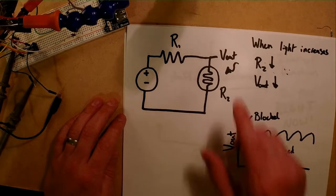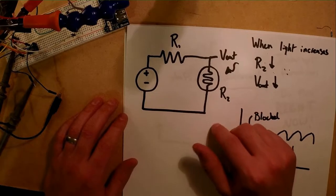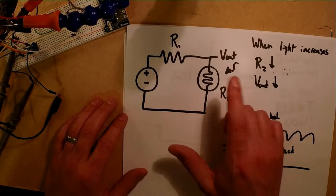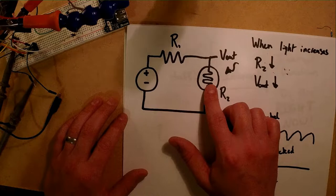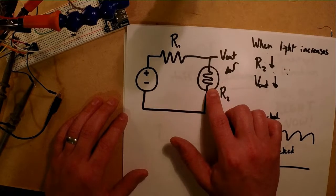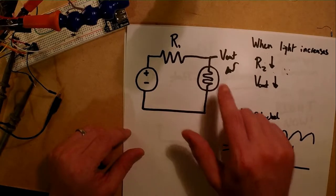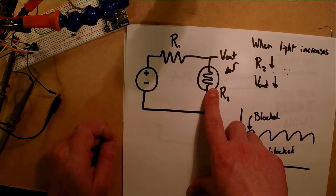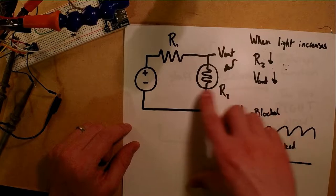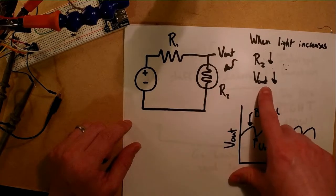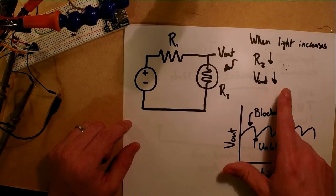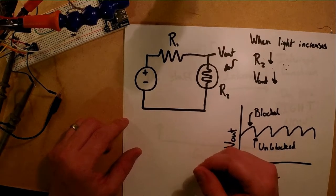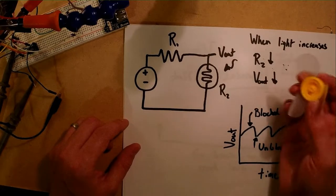We're going to be using the photoresistor element in your circuit, set up in a voltage divider circuit like we've done with a few other things during this series. We're going to use that to detect how much light is falling on the photoresistor. When more light shines on the photoresistor, its resistance decreases. In this circuit setup, if the resistance decreases, we expect V out will also decrease.